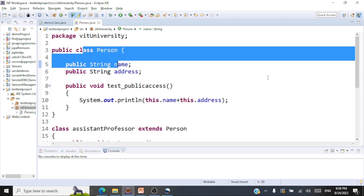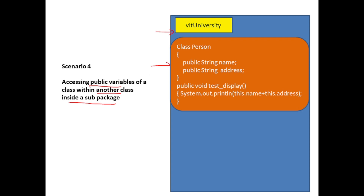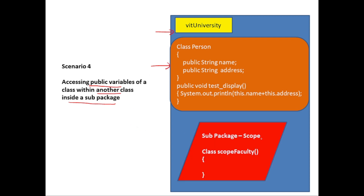Now let's go to scenario number four: accessing public variables of a class within another class that is inside a sub-package. We have the VIT University package with class Person. Now we are going to create a sub-package called scope. We are going to access the public data members within the methods of another class called ScopeFaculty inside this sub-package. Can we really access the public data members of a class within the methods of another class present within a sub-package? The answer is yes — when it is public, you can access it anywhere.